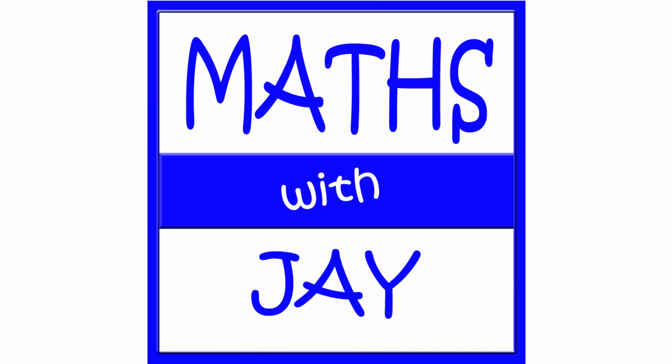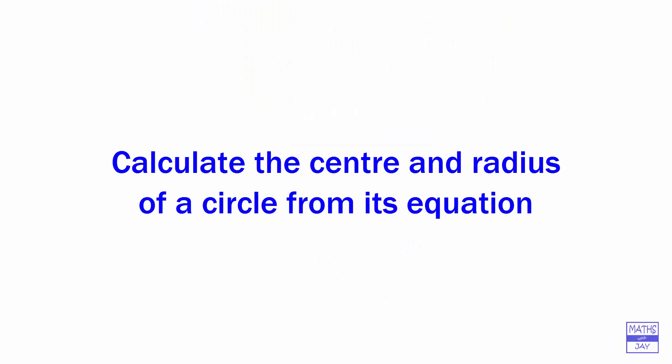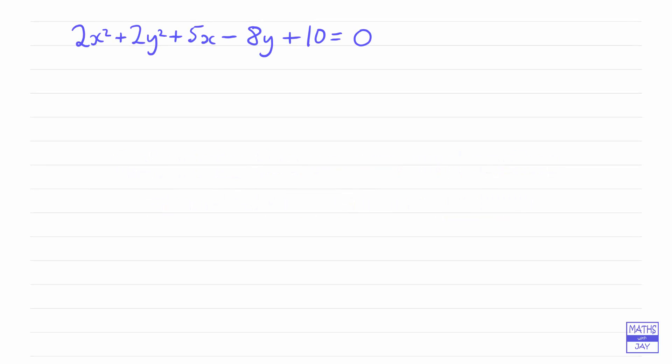Hello, welcome to Maths with Jay. So we're finding the radius and the coordinates of the centre of a circle with equation 2x squared plus 2y squared plus 5x minus 8y plus 10 is 0.